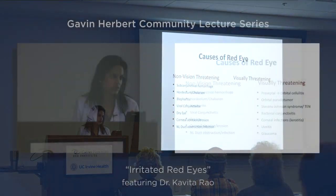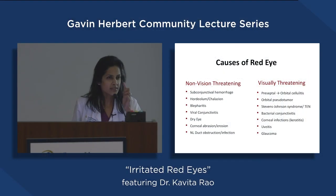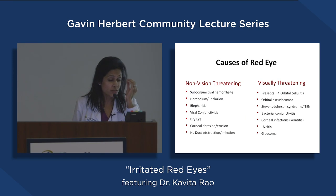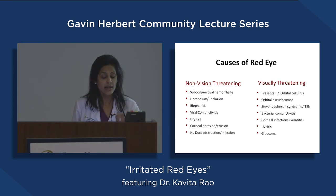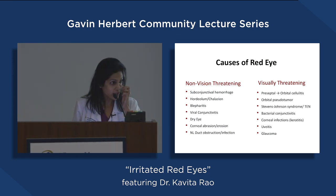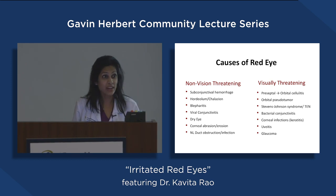Nasolacrimal duct obstruction — that's basically the duct right here by the nose where all of your tears drain. If that part gets obstructed, it backs up and the eye can get really red and inflamed.